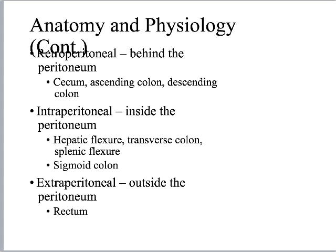Intraperitoneal structures — inside the peritoneum — include the hepatic flexure, transverse colon, splenic flexure, and sigmoid colon, as well as the stomach, portions of the duodenum, jejunum, ileum, all of the liver, spleen, and the tail of the pancreas. Extraperitoneal is the rectum, and if you think in terms of evolutionary biology, it makes sense to have the rectum — the most unclean portion — outside the garbage bag, keeping everything inside the peritoneum clean.